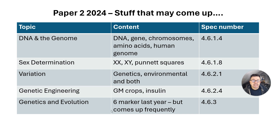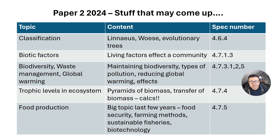On genetics and evolution, there was quite a bit last year including a big six-mark question, but it's such a large topic I would still learn it — particularly natural selection and theories of evolution. On classification, there was nothing, so look at evolutionary trees and know about Carl Linnaeus and Carl Woese and their ideas.